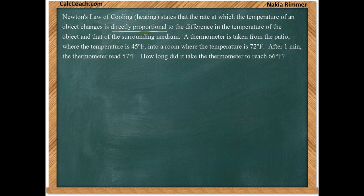From that we're going to get our differential equation. The information after this helps us figure out what the constants are and answer the question. A thermometer is taken from the patio where the temperature is 45 degrees into a room where the temperature is 72 degrees. After one minute the thermometer read 57 degrees. How long did it take the thermometer to reach 66 degrees?